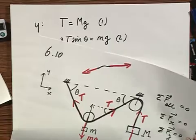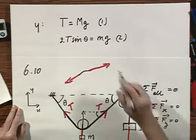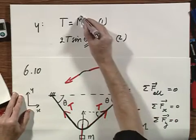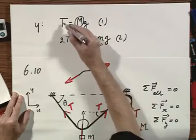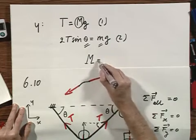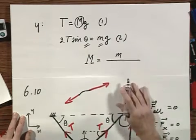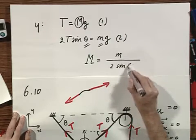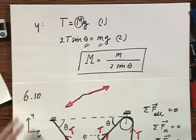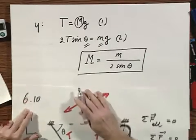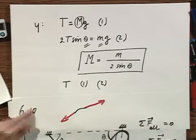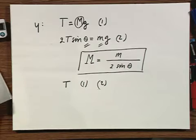I get 2T times the sine of theta equals little mg. And that is my second equation. Now suppose theta and little m are known, then I can find capital M, because I can eliminate T from these two equations. And you will find then, which is rather trivial, that capital M is little m divided by two times the sine of theta. So for a given value of little m and for a given value of theta, you immediately find what capital M is. And if you were interested in the tension, you can either use equation one or equation two.